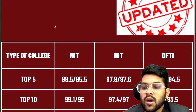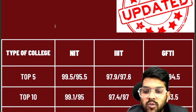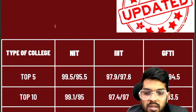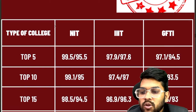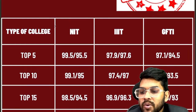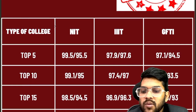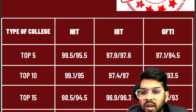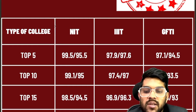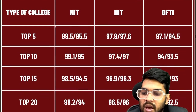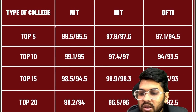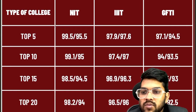For top 10 NITs: 99.1 for CSE and 95 for lower branch. For IIITs: 97.4 and 97. For GFTIs: 94 and 93.5. For top 15 NITs: 98.5 for CSE and 94.5 for lower branch. For IIITs: 96.9 and 96.3. For GFTIs: 93.5 and 93. For top 20 NITs: 98.2 for CSE and 94 for lower branch. For IIITs: 96.5 and 96. For GFTIs: 93 and 92.5.